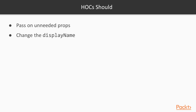The last thing that they should do is hoist static methods. A component in React and React Native can have static methods besides the ones that React provides. For example, if you use the library React Navigation, you can add a static method called NavigationOptions. With this one you can control how the navigation works. If we have a higher order component and we wrap a component that has this static method on it, then we need to make sure that we hoist — so basically copy the static methods over to our outside component.